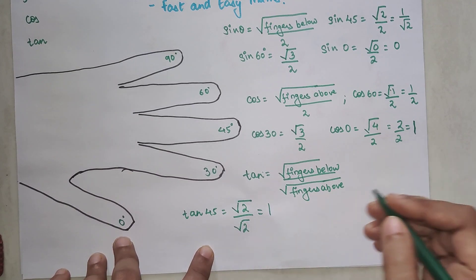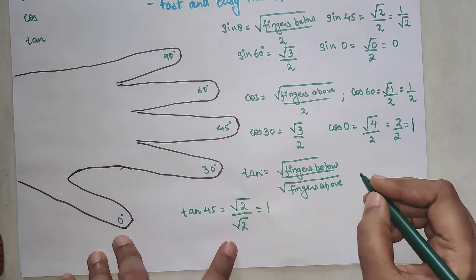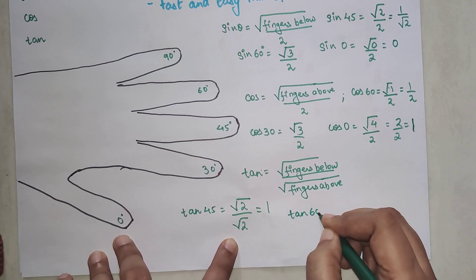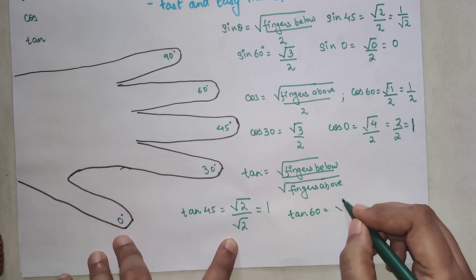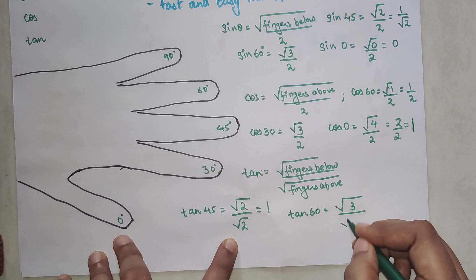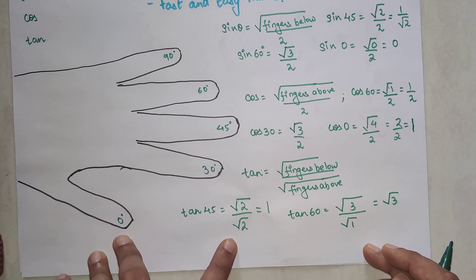Now similarly let's look for tan 60. So tan 60, how many fingers below we have 3. How many fingers above we have 1. So root of 1 is 1. So we just get as root 3.